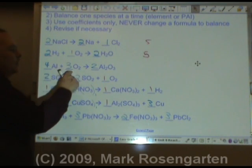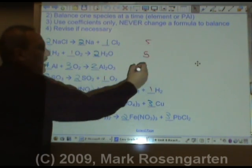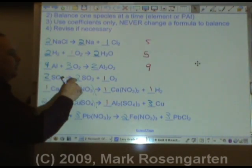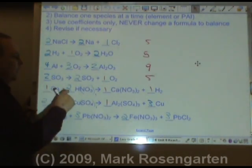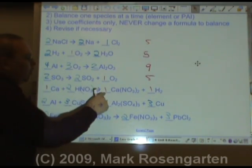The sum of the coefficients in this reaction is 4 plus 3 is 7, plus 2 is 9. 2 plus 2 is 4, plus 1 is 5. 1 plus 2 is 3, 4, 5.